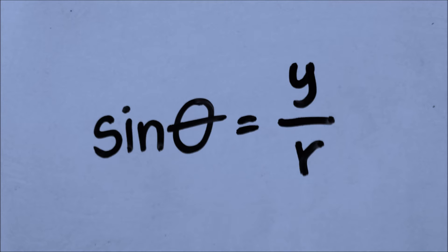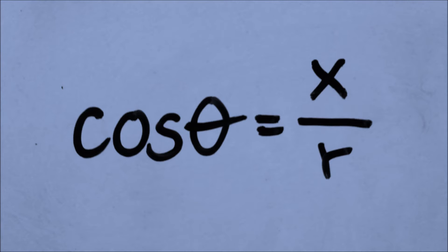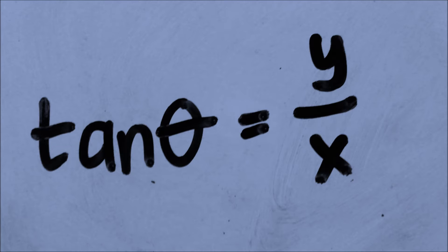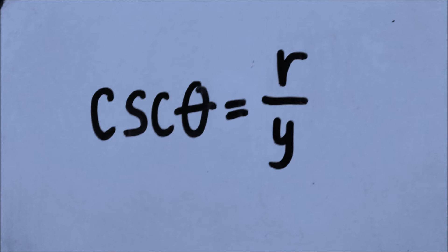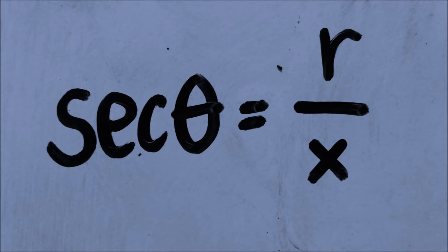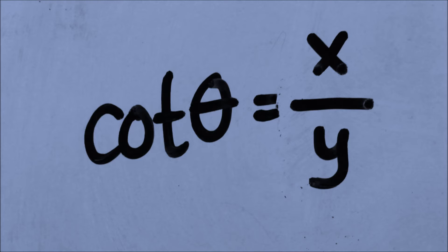For the sine function, y over r. For the cosine function, x over r. For the tangent function, y over x. For the cosecant function, r over y. For the secant function, r over x. And for the cotangent function, x over y.